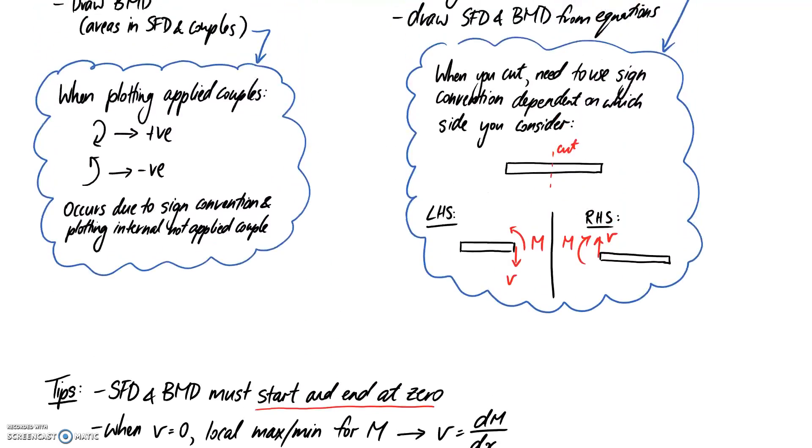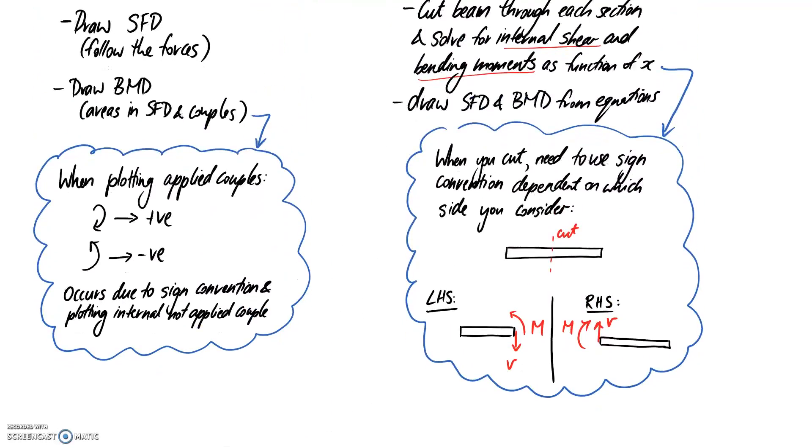That's exactly why, when we were talking about the graphical method, we said that the bending moment diagram was basically the areas in the shear force diagram. Going from shear force to the bending moments is essentially taking the integral - you're taking the area under the curve.